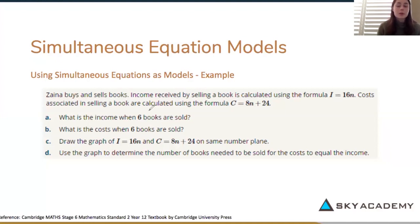So what is the income when six books are sold? We know this is the income formula so we're going to use that and income is going to equal 16 times 6 because n is the number of books and when you do 16 times 6 it's going to equal 96.